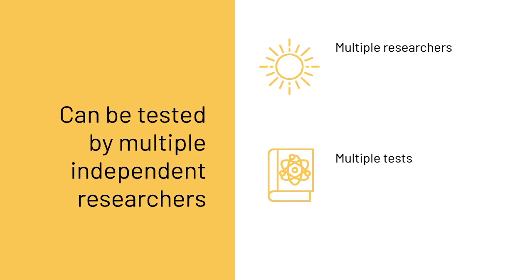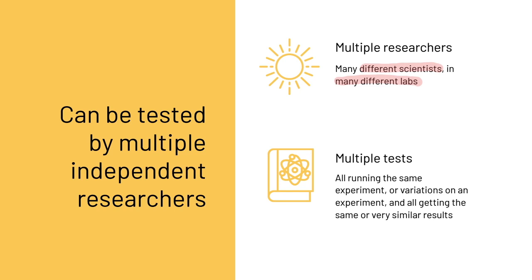A hypothesis becomes a theory when it can be tested by multiple independent researchers — many different scientists in many different labs testing the same thing, running the same experiment or variations on an experiment and all getting the same or very similar results. So when a hypothesis can be tested by multiple researchers all getting the same or very similar results, that is when a hypothesis can become a theory.